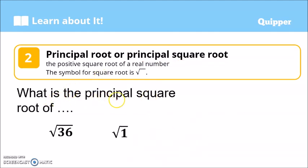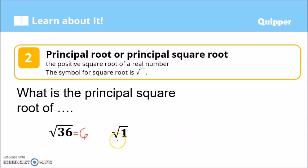For example, what is the principal square root of 36? When we use the radical sign without a plus-minus symbol outside, it refers to the principal root only. So the principal square root of 36 is positive 6. And the principal square root of 1 is 1.